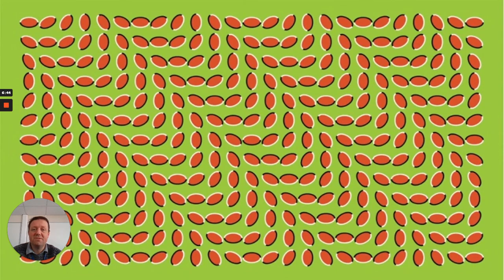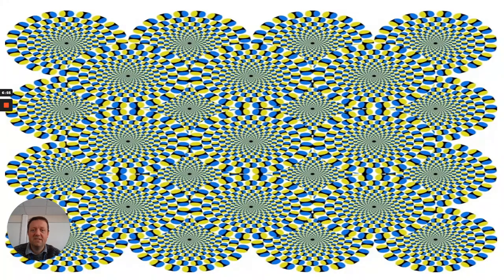Here are some further examples. Some of you may see this particular picture as moving — I can assure you it's not. It's how your senses represent the external world to you. Similarly, this one you may see as moving or you may not. But the differences are really just down to the person doing the perceiving, not the object itself, which is not moving.